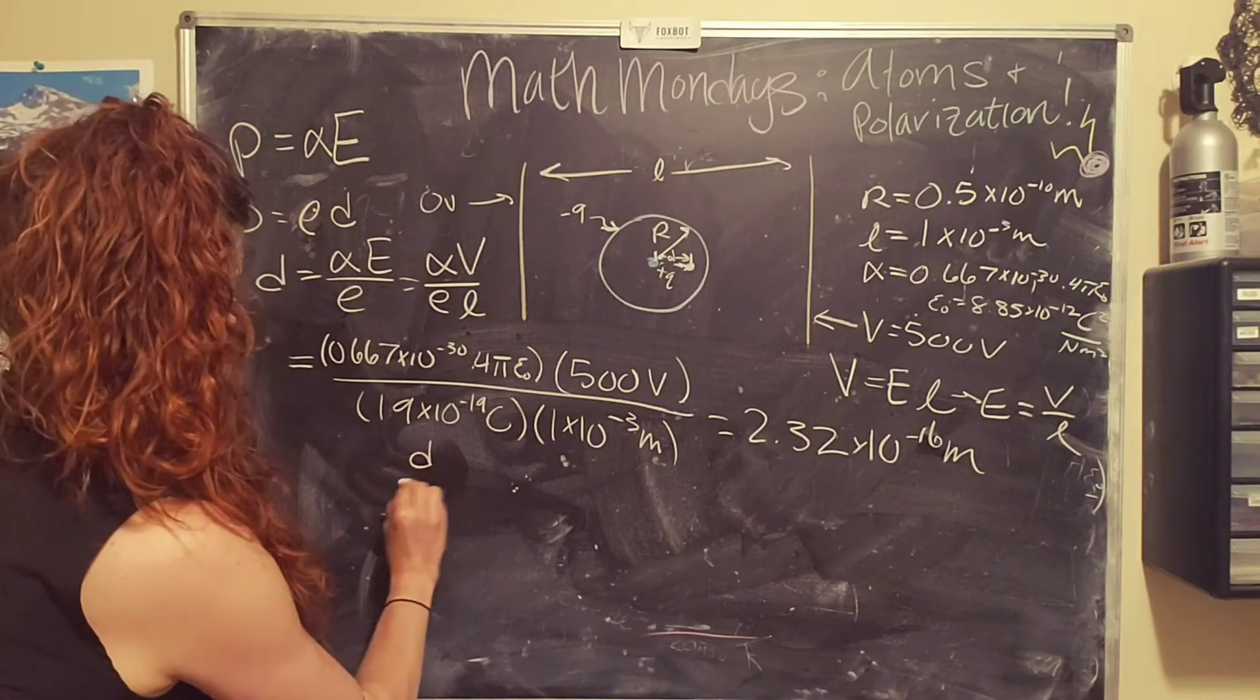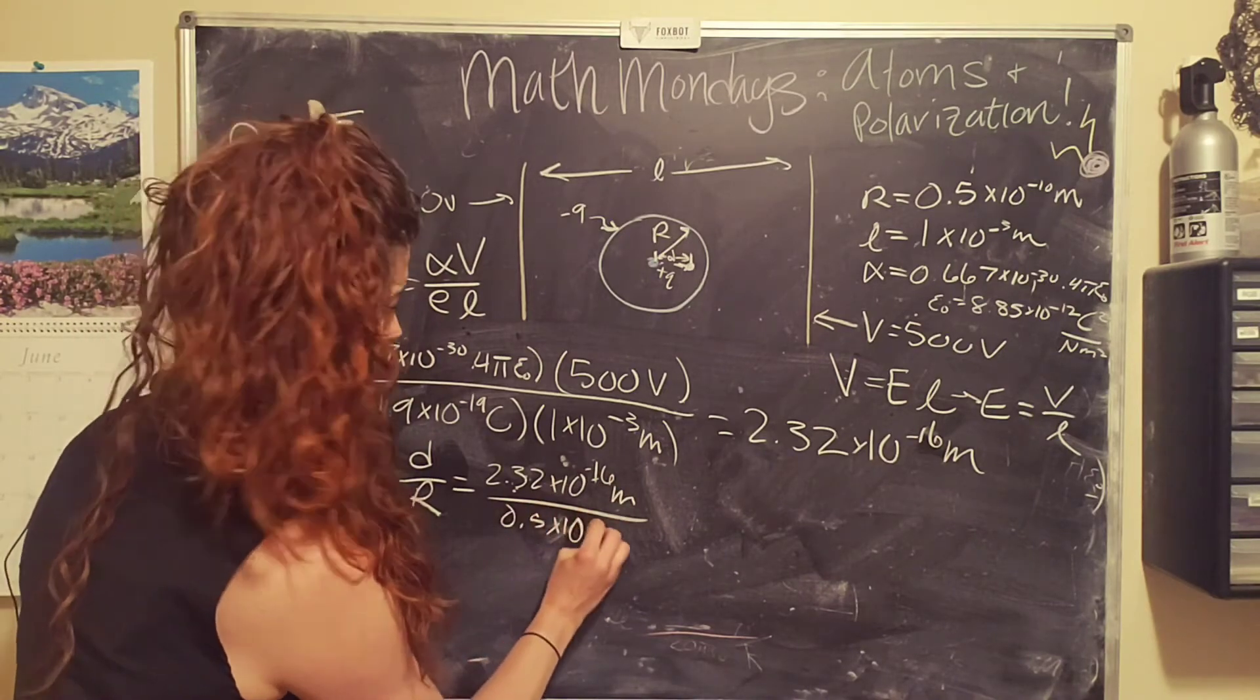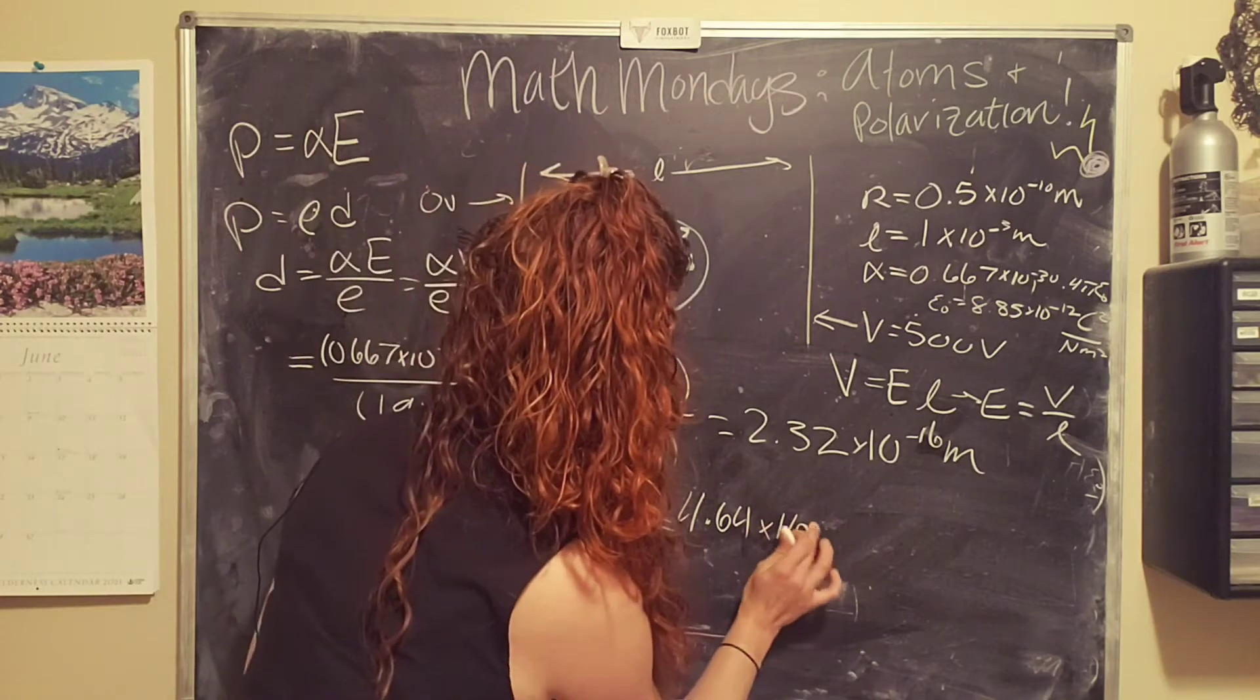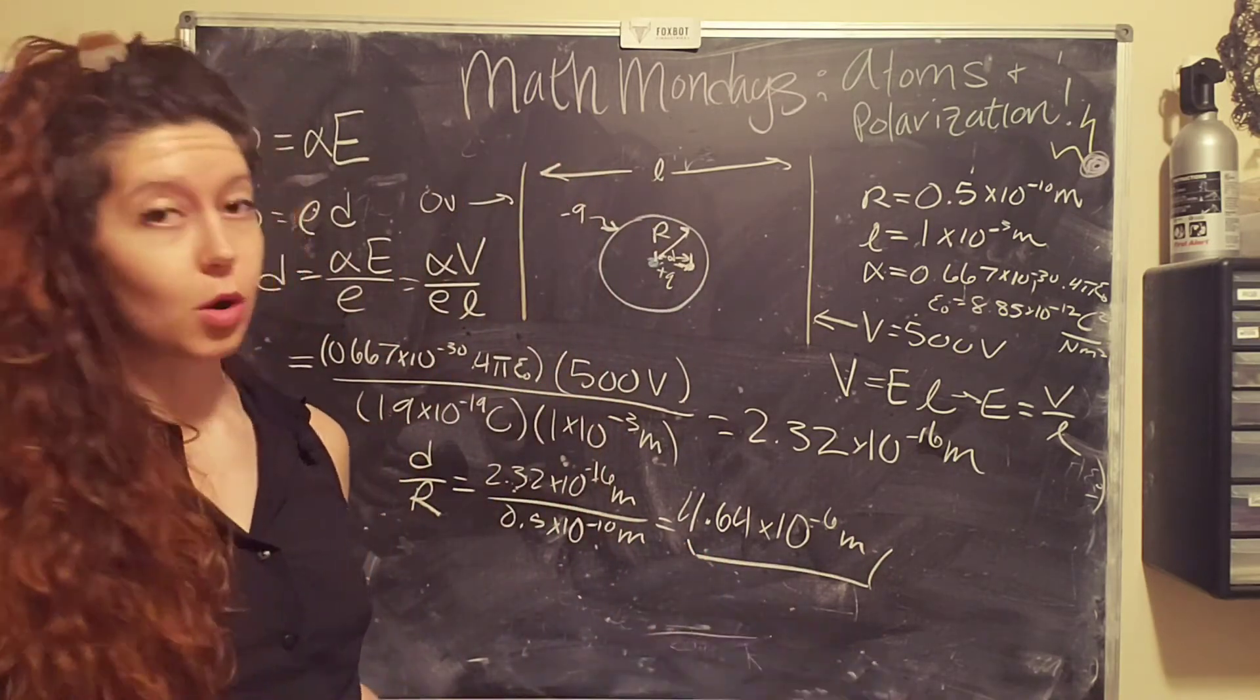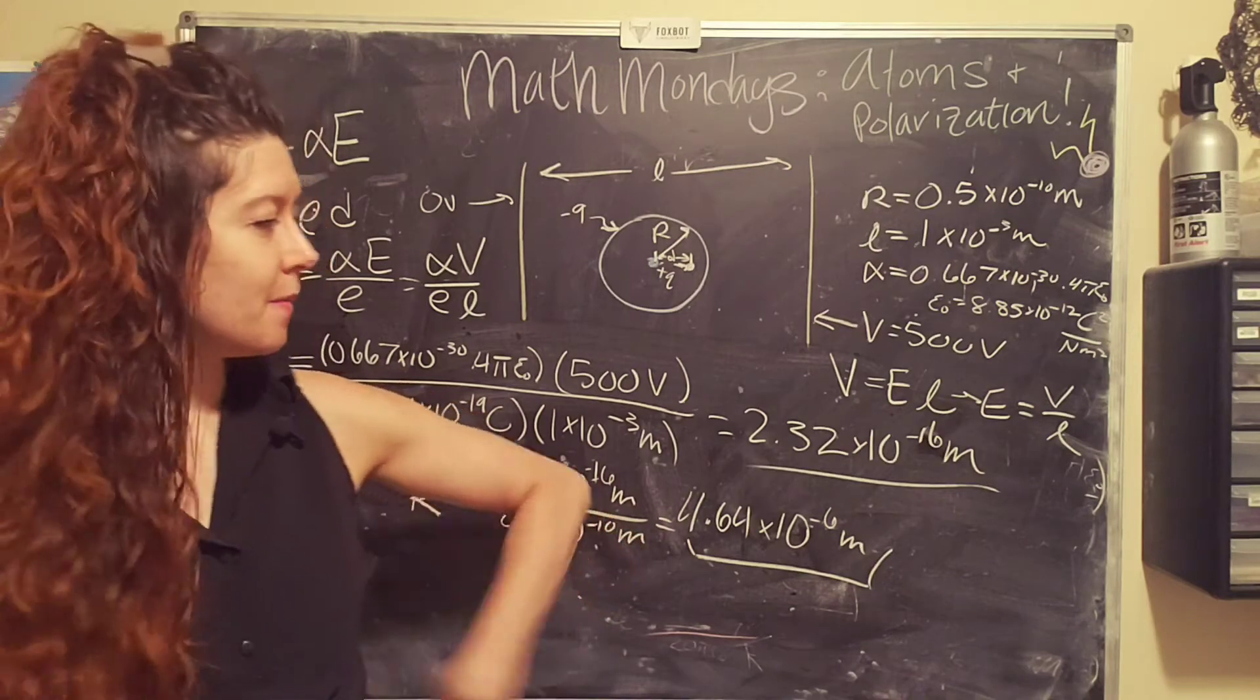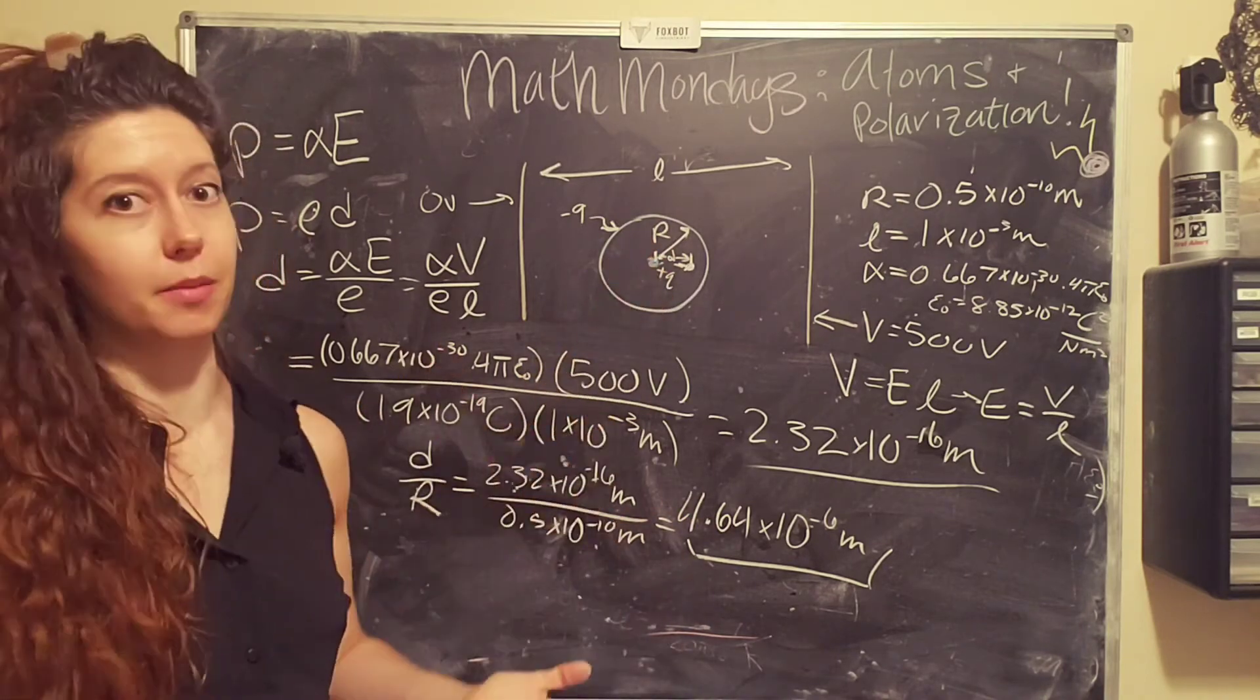But we need to find the ratio of this distance that the nucleus has moved to the radius of the atom. And so what we do is we do what is d over the radius of the atom. So 2.32 times 10 to the negative 16th meters divided by 0.5 times 10 to the negative 10th meters. And what you get is 4 times 10 to the negative 6 meters. That's really small, a very very small ratio. So yes, this distance is extremely small, but also atoms are real tiny. And so this is like 4 million times smaller than the radius of the atom.